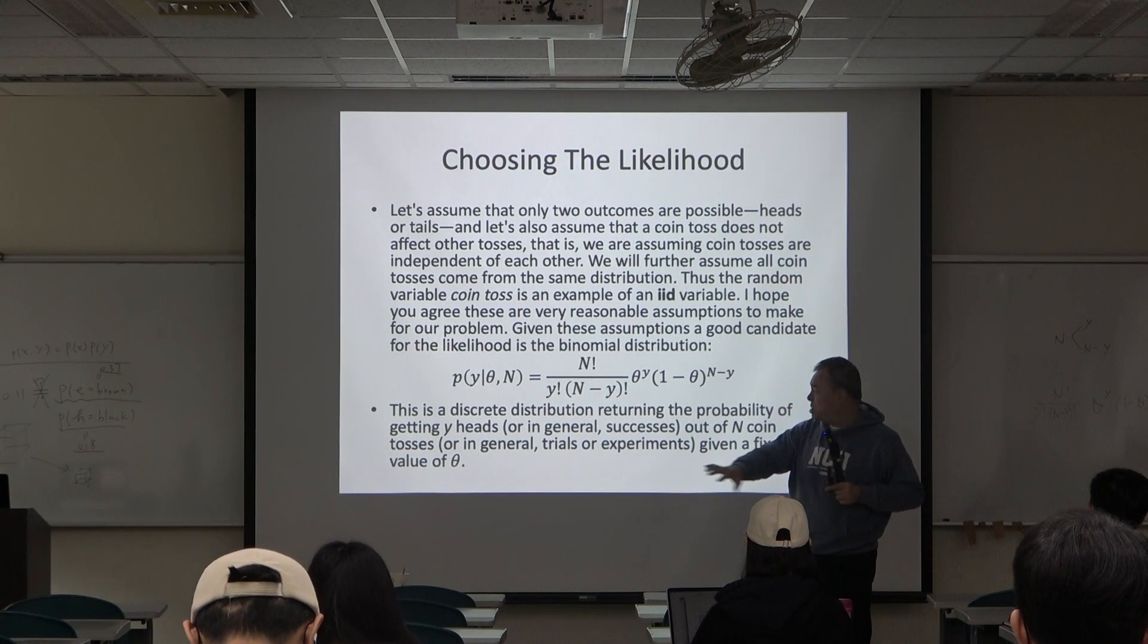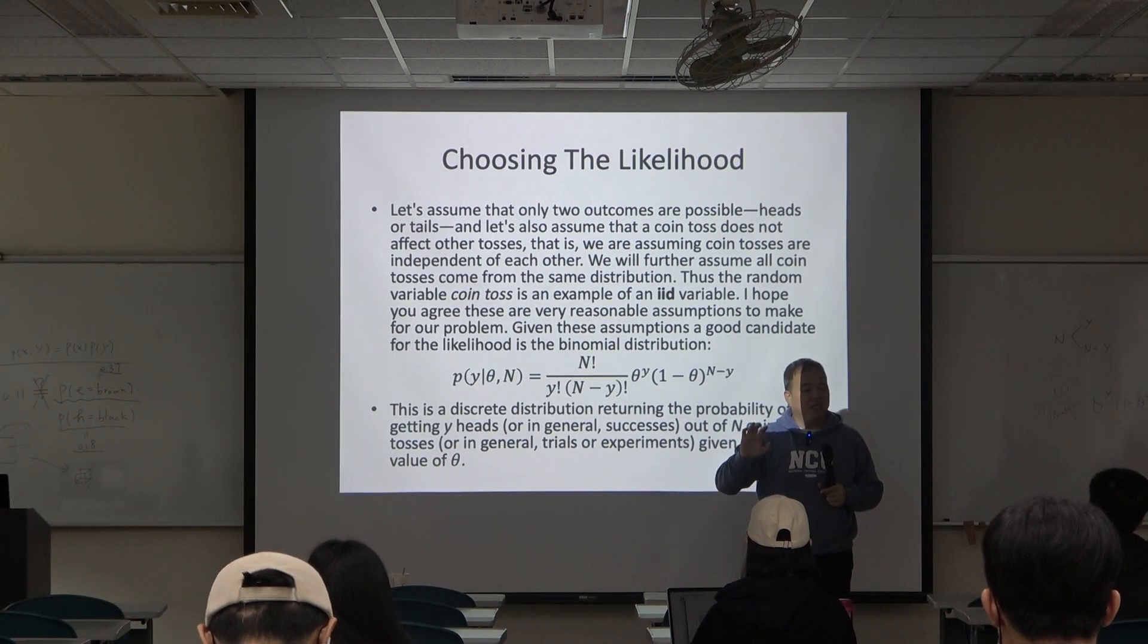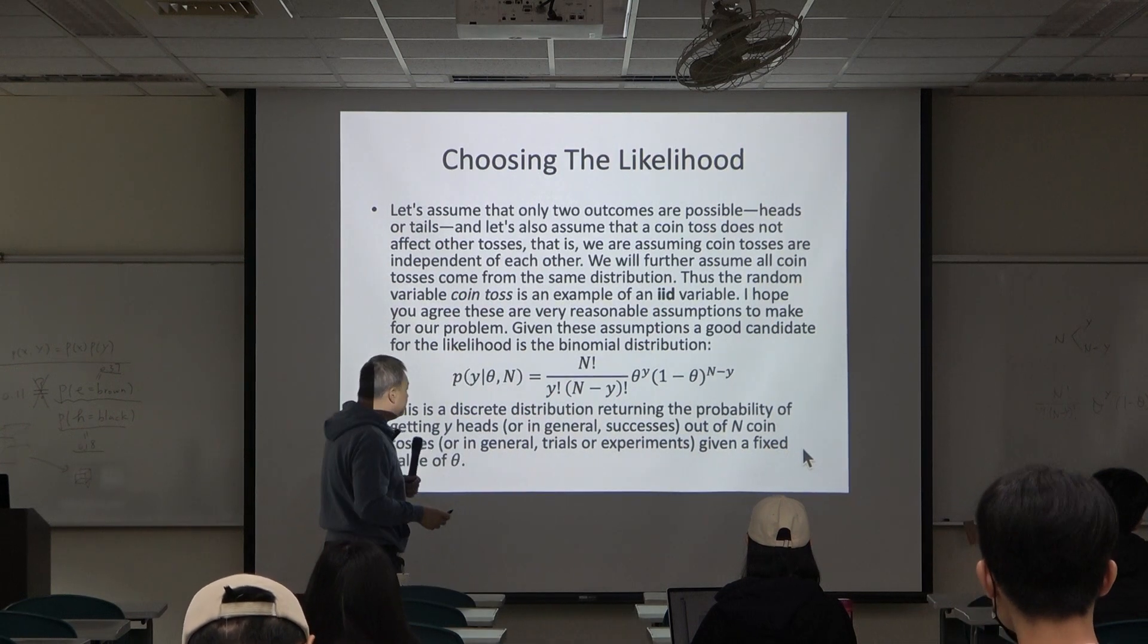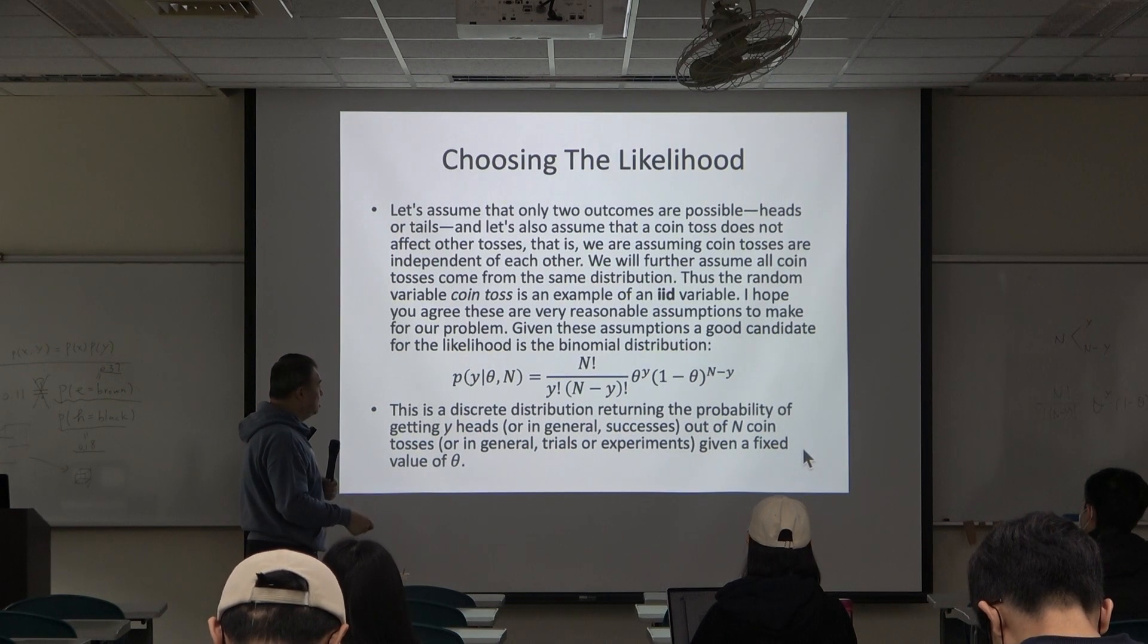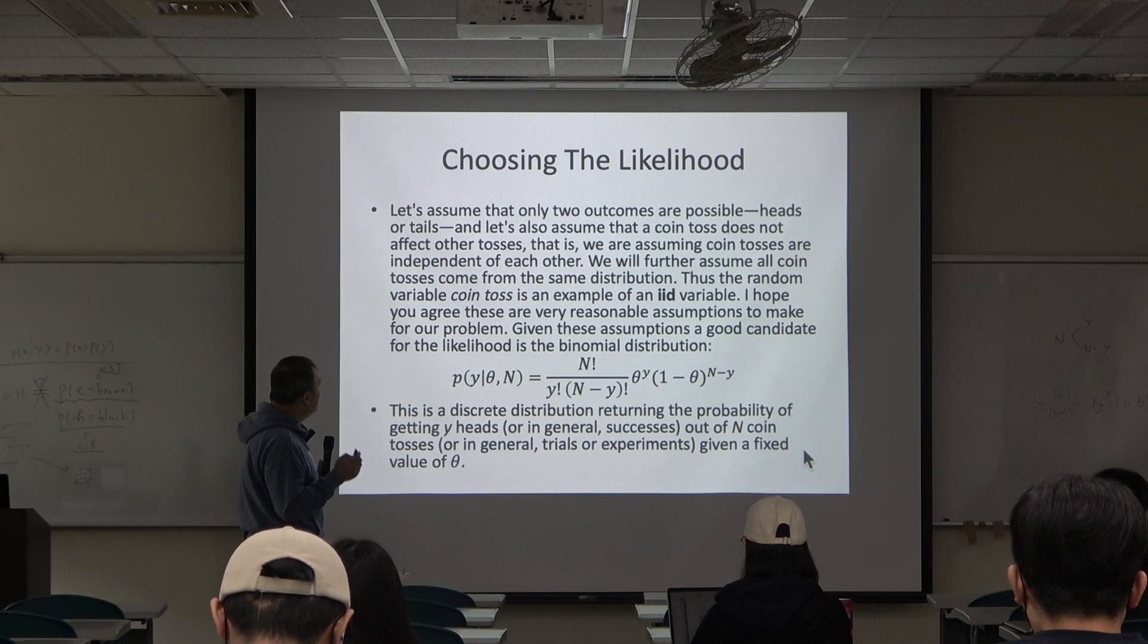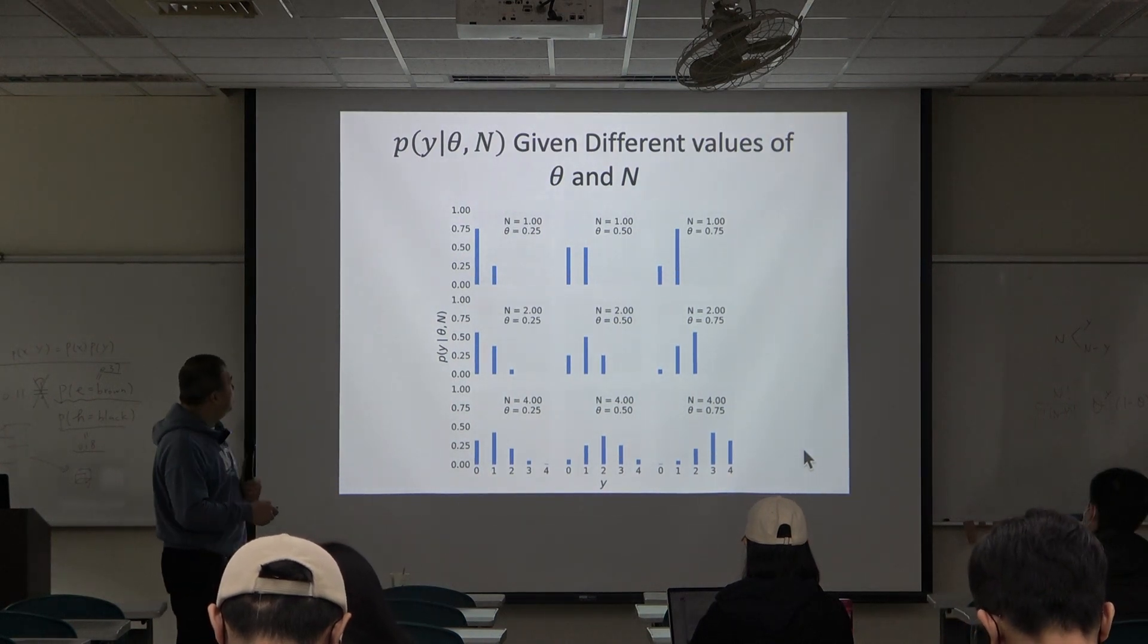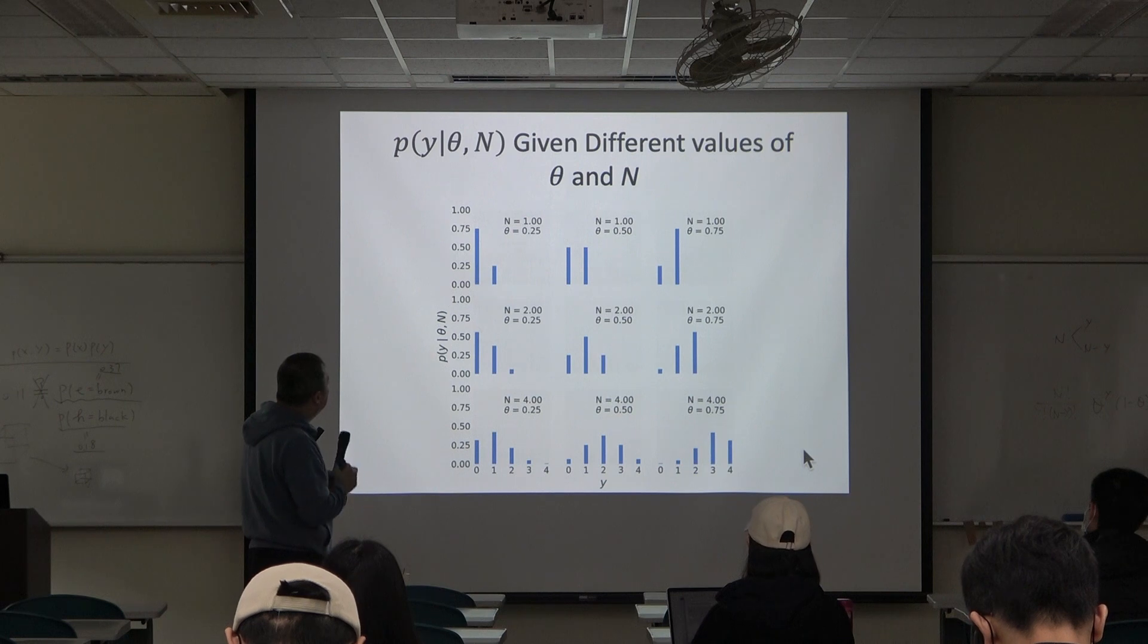The integral from zero to one given this formula d-theta is not one. So given a fixed value of theta, this is a probability distribution of y. Here we give you some examples where n is one.